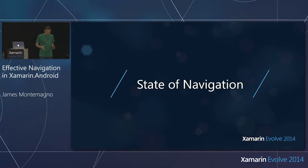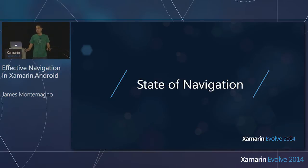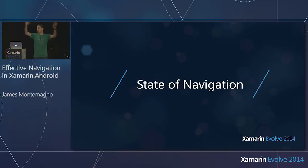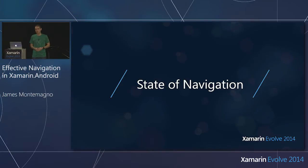I want to talk about the state of navigation in Android, because it's a little tricky. Over the years, navigation paradigms have really shifted, especially in Android itself. In iOS it's been pretty easy — you just pop, modal, that's your navigation paradigm. In Android, we might have a single screen, multiple screens, or a whole world of screens. So as developers, when we try to lay out our applications, we have to think: what's best for our users? How do we navigate them to the content we want them to go to?